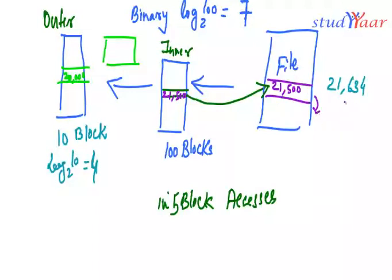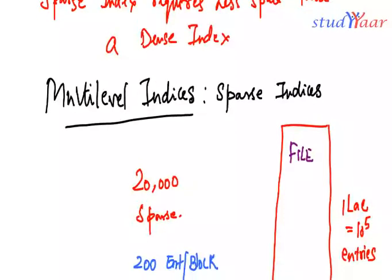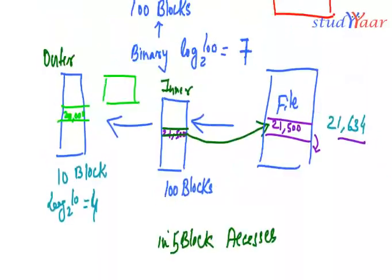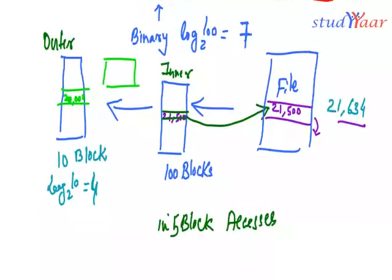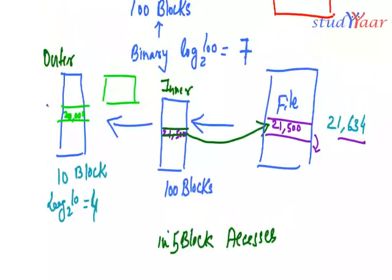So from here this sparse index is going to take me to 21,500 and I would follow the pointers from here to reach 21,634. So that is how I use a multi-level index which is a sparse index on another sparse index where the inner sparse index is on a file and the outer sparse index is on the inner sparse index. We can have any number of levels here.